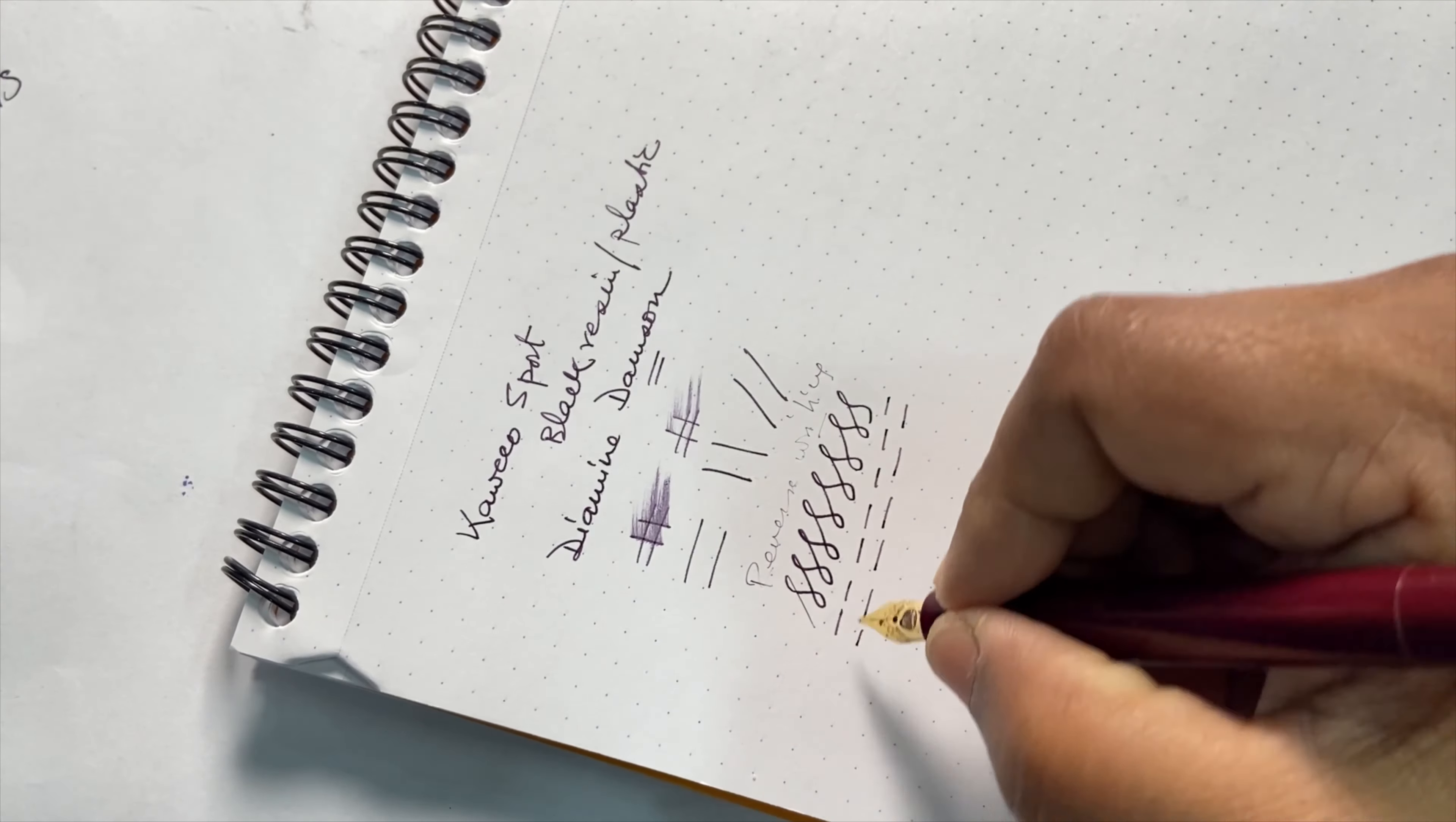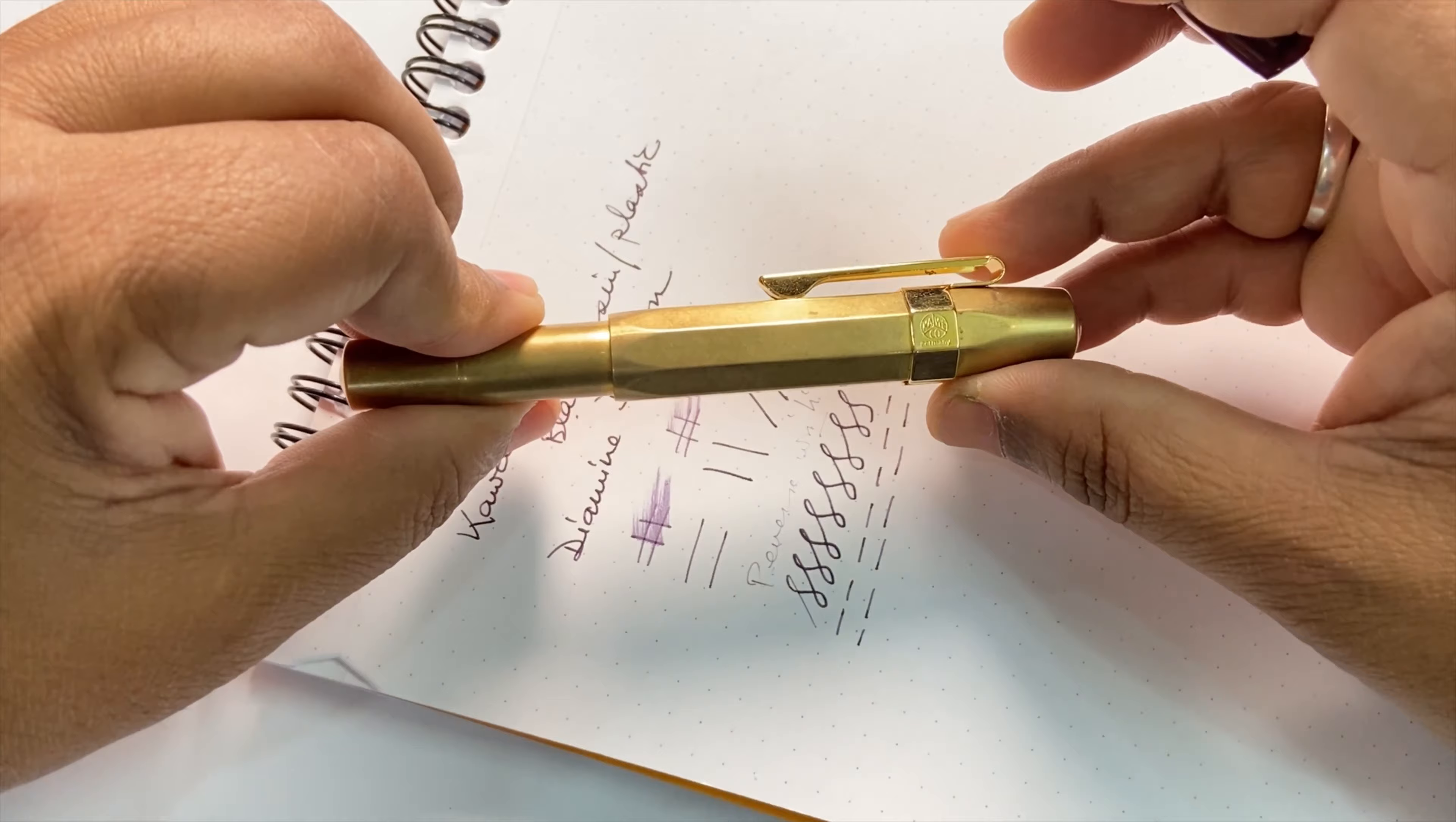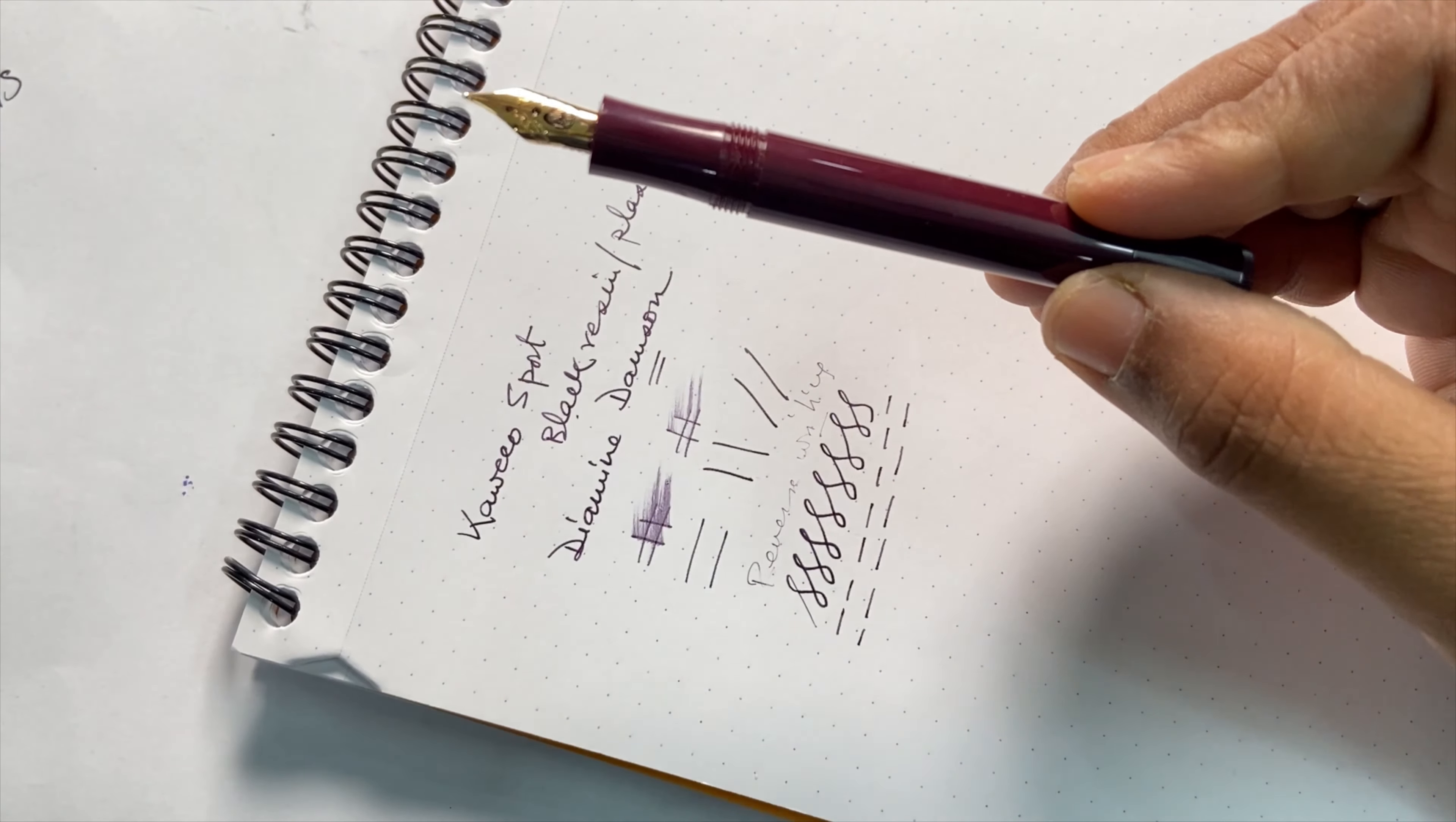So this is the Kaweco Sport in a plastic version, as opposed to the much more expensive and solid-feeling and heavy brass versions. It's a matter of individual tastes, frankly, because I do know of people who love Kaweco brass or bronze merely because these pens develop a patina over time on this solid brass body. And there are those who would rather find it a bit heavy, and for that they have this plastic version of the Kaweco Sport.